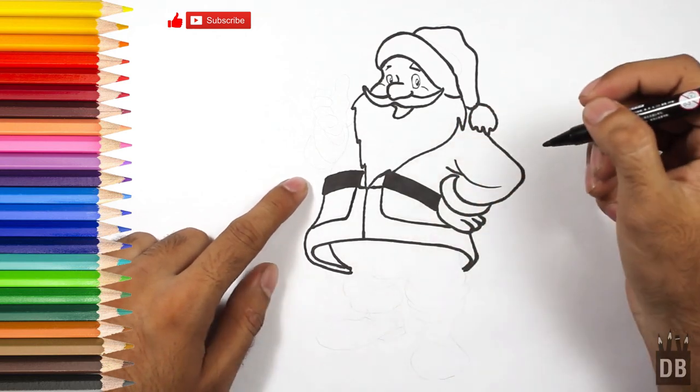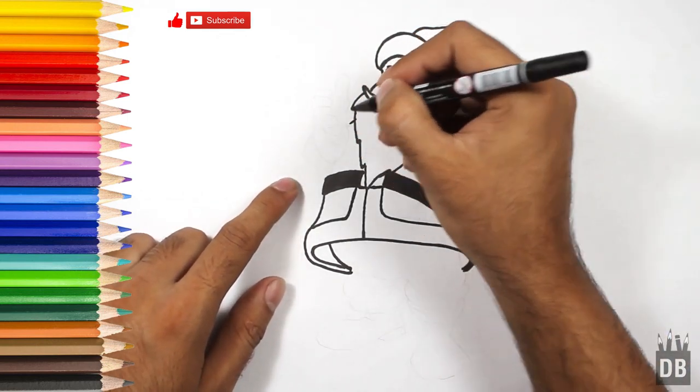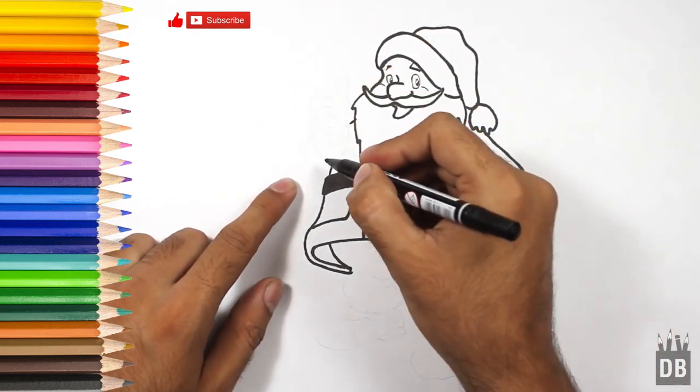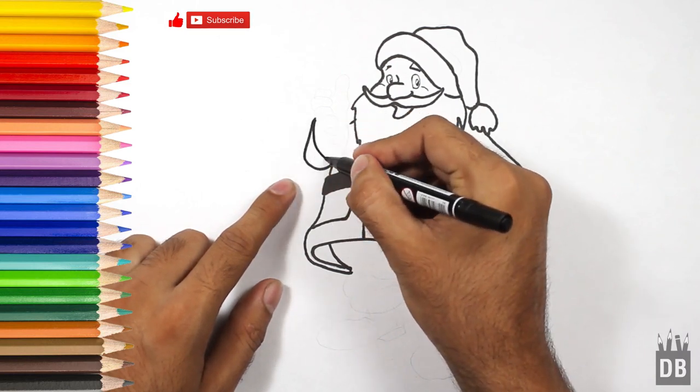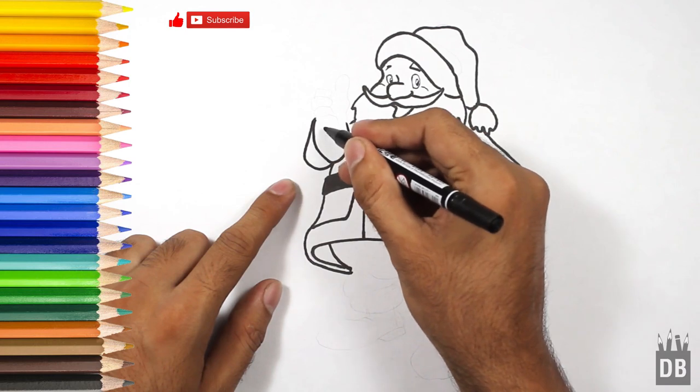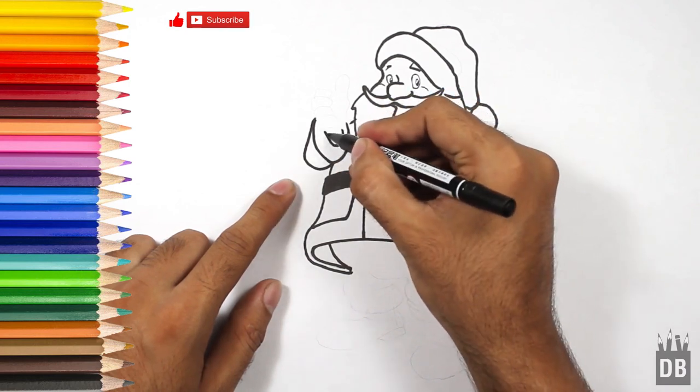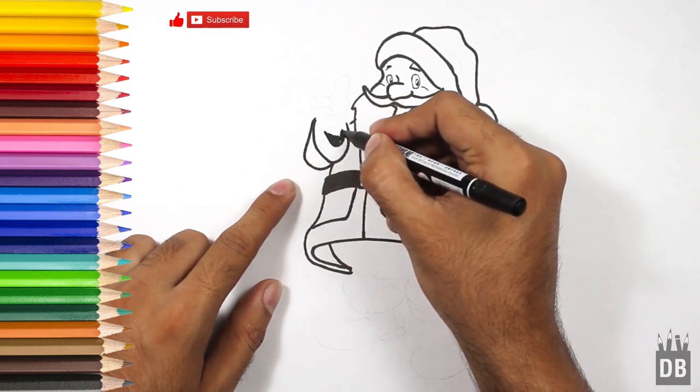Now we are going to put the second arm. The second arm will come over from here. Color it in black to see the depth.